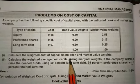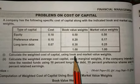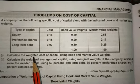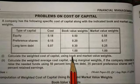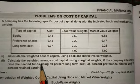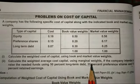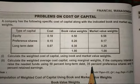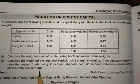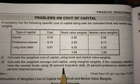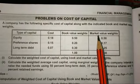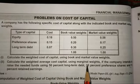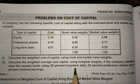We need to calculate the weighted cost of capital using book and market value weights. We need to find out the weighted average cost of capital using book value weights and market value weights. Second, calculate the weighted average cost of capital using marginal weights, if the company intended to raise the needed funds using 50% long term debts, 35% preference share, and 15% retained earnings.